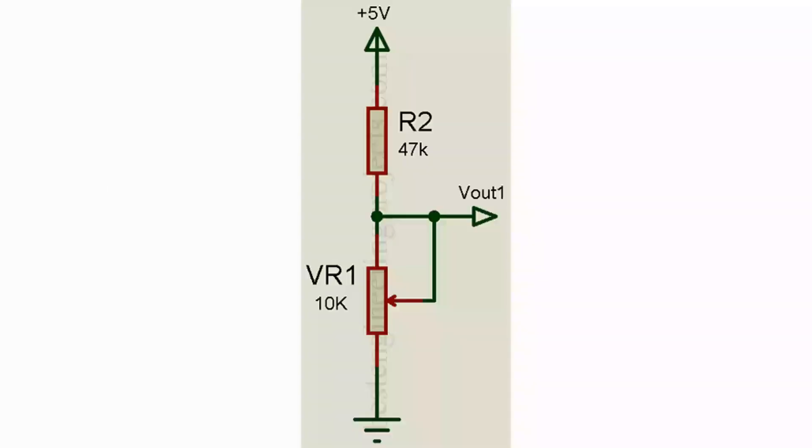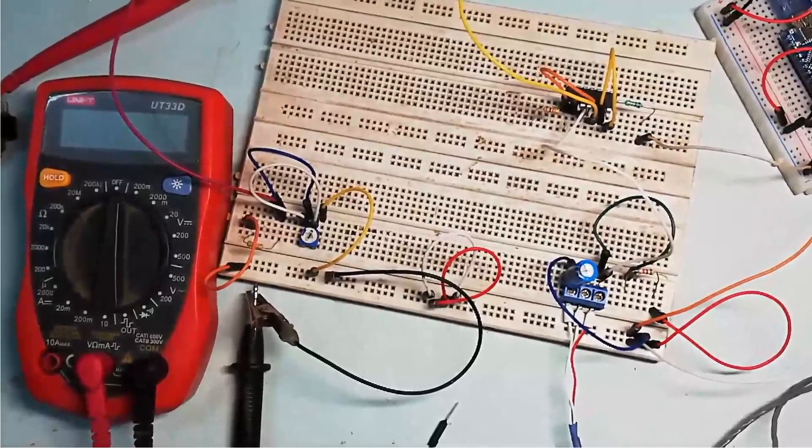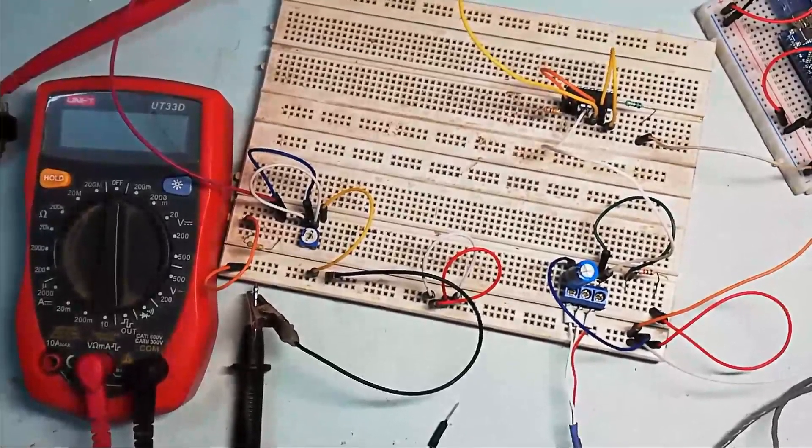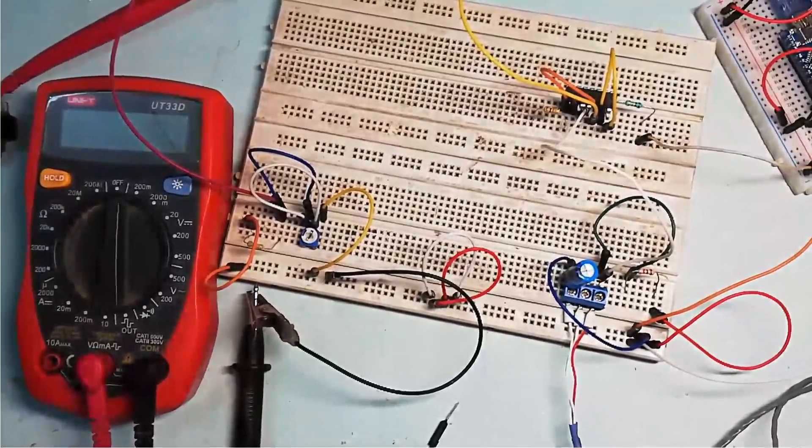A constant voltage source is designed using voltage divider network made from variable resistor VR1 and fixed resistor R2. Now adjust variable resistor so that output voltage must be equal to voltage at 0 degree Celsius, that is 0.4545 voltage. Now let's calibrate the output voltage of constant voltage source. That is, we need 0.4545 voltage. Connect the multimeter.